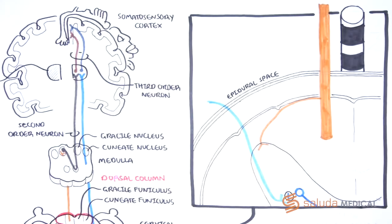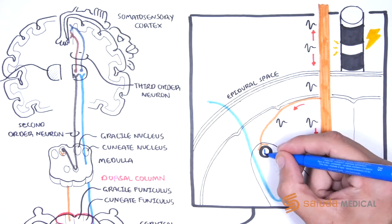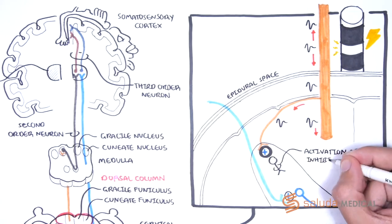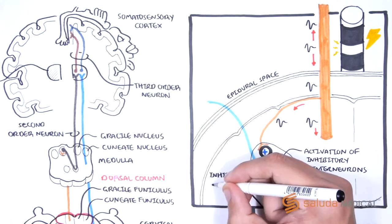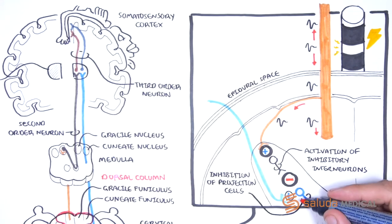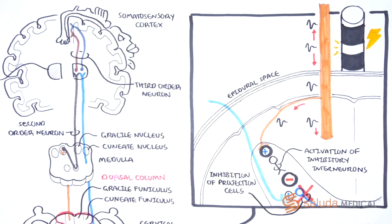Activation of mechanoreceptors in the dorsal columns via spinal cord stimulation leads to activation of inhibitory interneurons in the spinal dorsal horn, who in turn suppress the activity of nociceptive projection cells, to reduce the number of pain signals ascending to the brain.